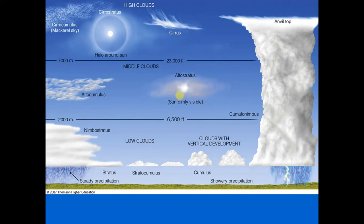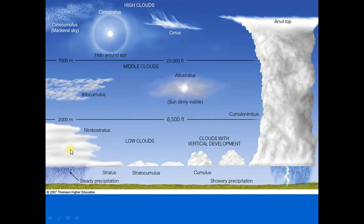Nimbostratus is a type of low cloud — those found within 6,500 feet of the surface, generally made only of liquid droplets, though in very cold weather they may include some ice crystals. Nimbostratus is a dark gray, damp-appearing cloud layer associated with generally continuous falling rain or sometimes snow. The intensity is usually light or moderate, never heavy or showery. The vertical air motions — updrafts and downdrafts — are not strong enough to form very large raindrops.